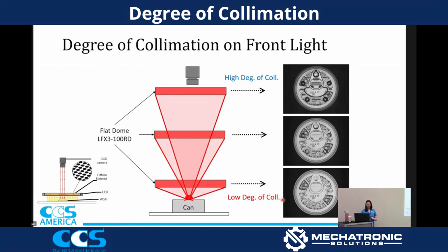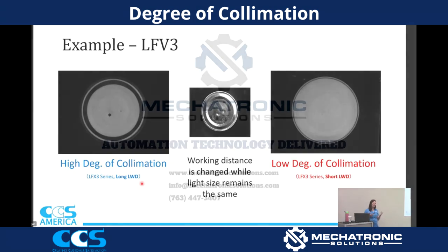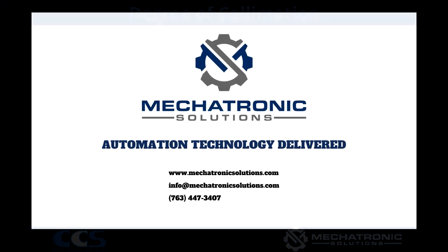Another example: if you have a dent in a battery, a high degree of collimation with a long working distance lets us see that defect clearly. But as we get closer and closer, the defect disappears and it no longer looks like there's a problem. So once again, if you have a coaxial light at the wrong working distance, you can't solve the application — even though the right solution was right there.